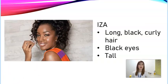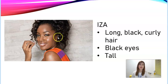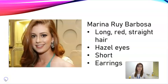Now we have another singer — I like her very much. Her name is Isa. She has long, black and curly hair. Can you see how curly her hair is? Very beautiful curly hair. And she has black eyes, as you can see here. And I think she is a tall woman. So this was Isa and her description.